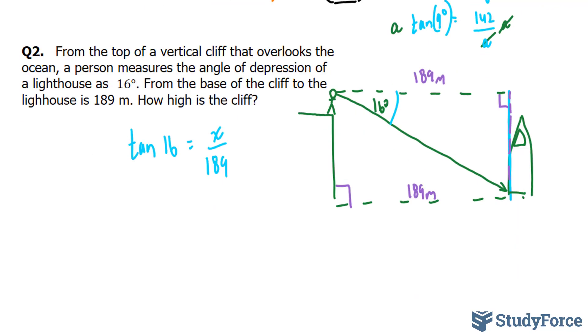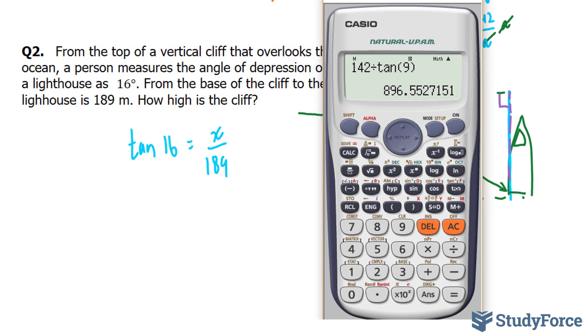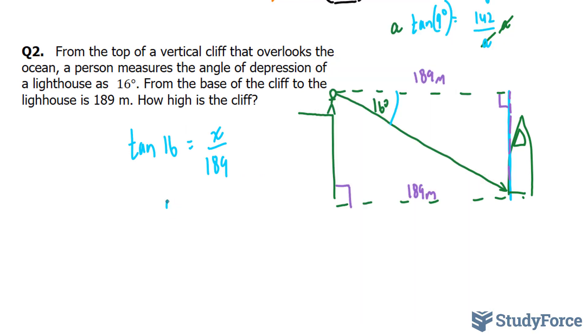To find my x, we multiply both sides by 189 and we are done. So tangent 16 times 189 gives us 54.19 meters. So to conclude our findings, the cliff is 54.19 meters high.